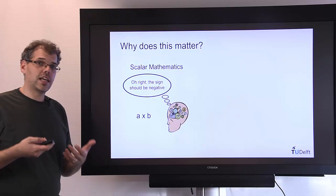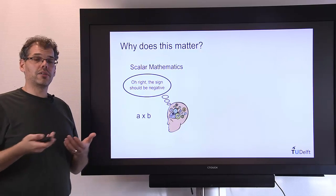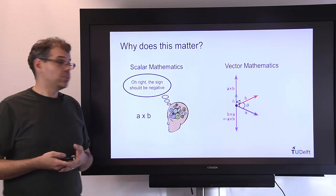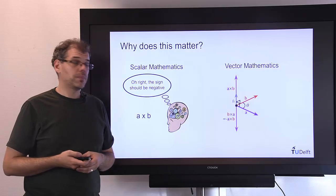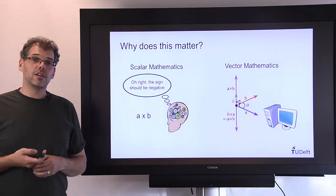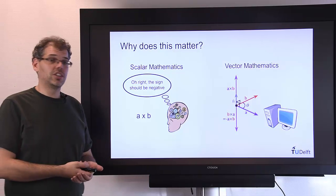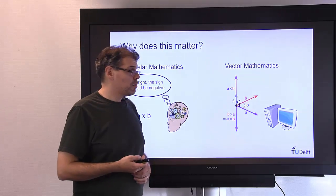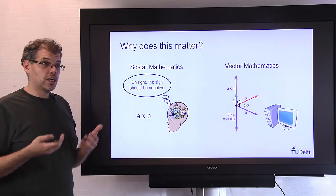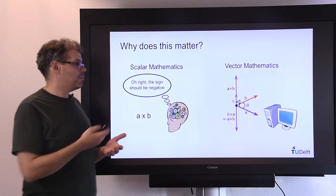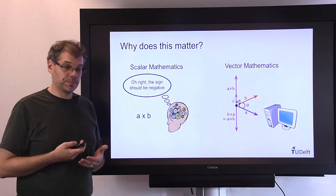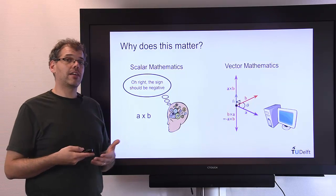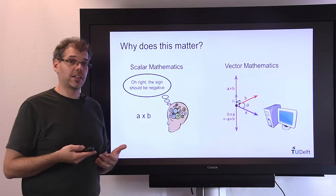The problem is, is that the principles we teach you in this course will allow you to do more and more complex problems. And eventually, you're going to have to get to vector mathematics. And hopefully, utilizing a computer that follows instructions, it can't do this thinking for you. And in vector mathematics, the cross products give different results if you do a cross b or b cross a.